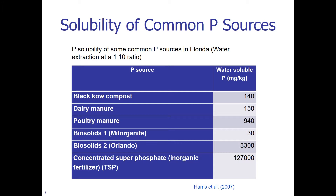Most interesting is the comparison of the two biosolids. The difference in water-soluble P between biosolids 1 and biosolids 2 is very large. The superphosphate, as expected, has the highest water-soluble P since it is extremely and completely soluble. We cannot simply assume that results from one biosolid source apply to another, nor from one manure source to another.